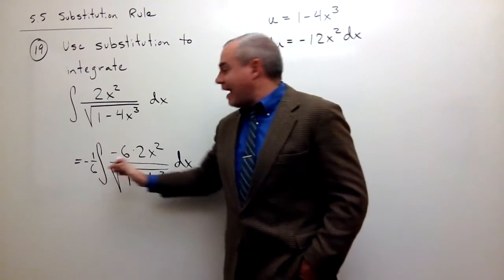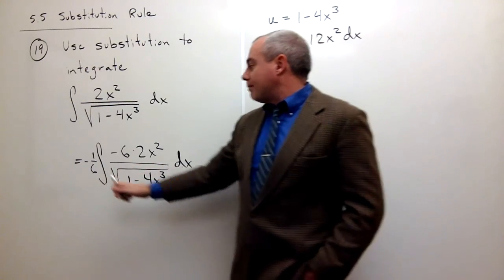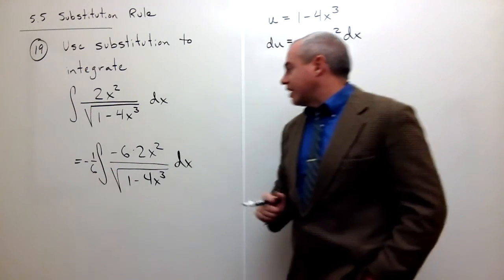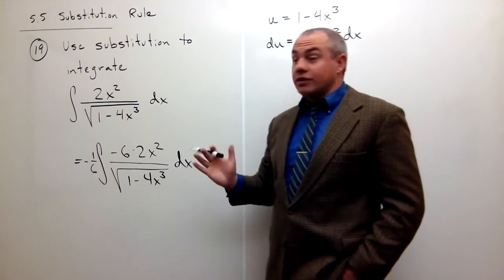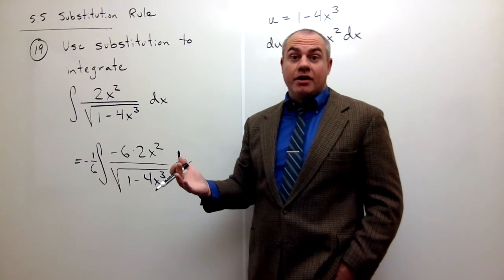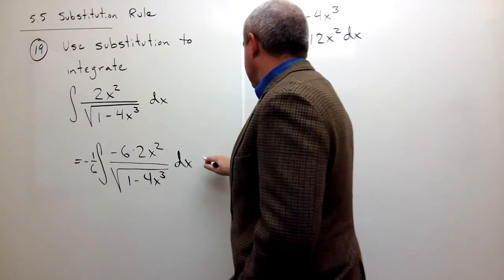So notice at this point, I haven't changed anything at all. I have a minus 6 on top and I have a negative 1/6 on the outside. So I've got, I've only multiplied this thing by 1. So everything's fine. But notice that now I could rewrite this thing.